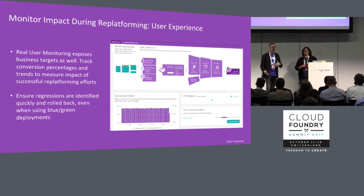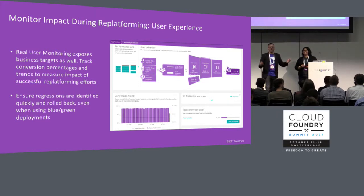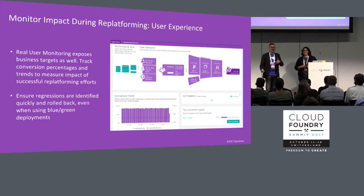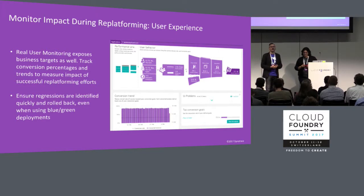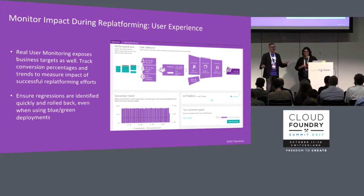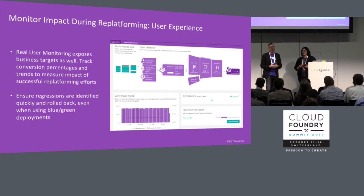There are two lenses to user experience: the hard values like response time, but user experience also incorporates business metrics. You want to ensure that if you've taken your well-structured monolith and split the orders piece out of it, you haven't resulted in a loss of conversions. You want to make sure your technical changes haven't had a negative impact on the business. And it's important to understand and quickly identify regressions so that you can roll them back quickly.